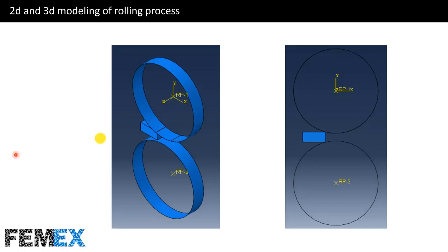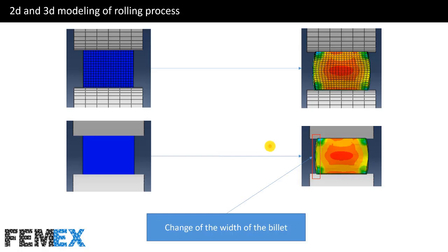Here you can see the 3D model and 2D model of the rolling process. This is the result of 3D modeling of cold rolling process. Here you can see the change of width of the workpiece during the simulation. If you use 2D planar space, you cannot capture such behavior. But if you model the process in 3D space, you can capture this phenomenon.